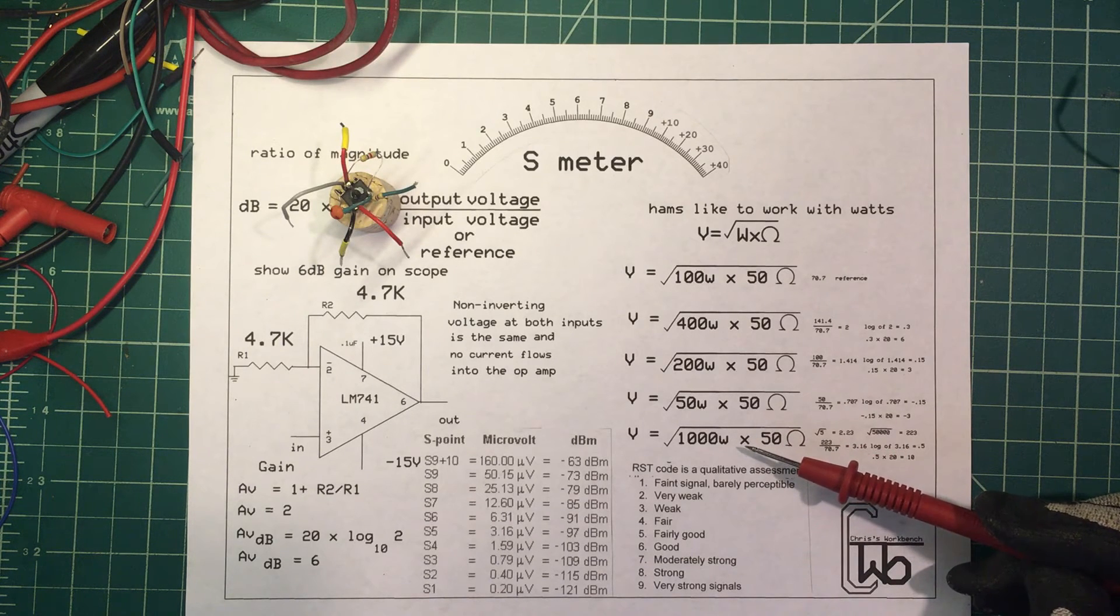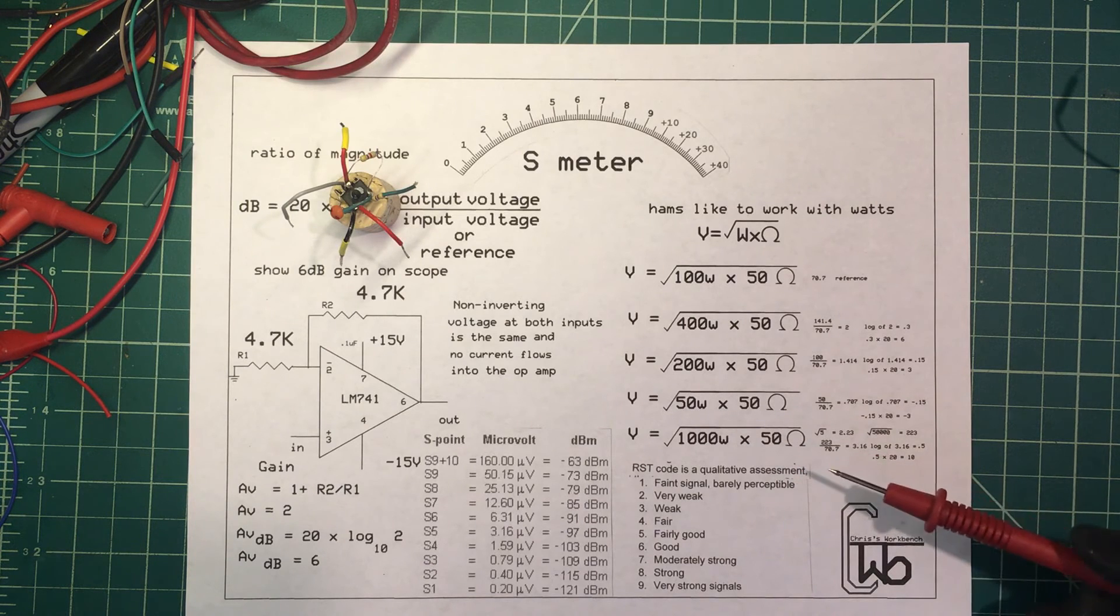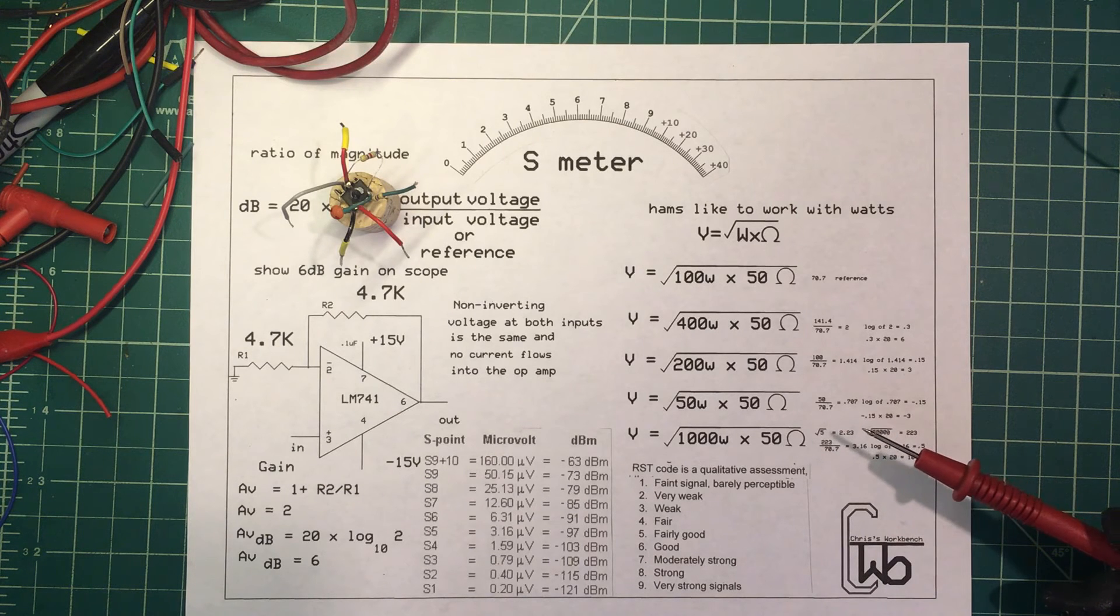We divide that by our 70.7. It goes in there three times - 3.16 times. Log base 10 of that's going to be 0.5 times 20 - 10 dB. We'll be up 10 dB.